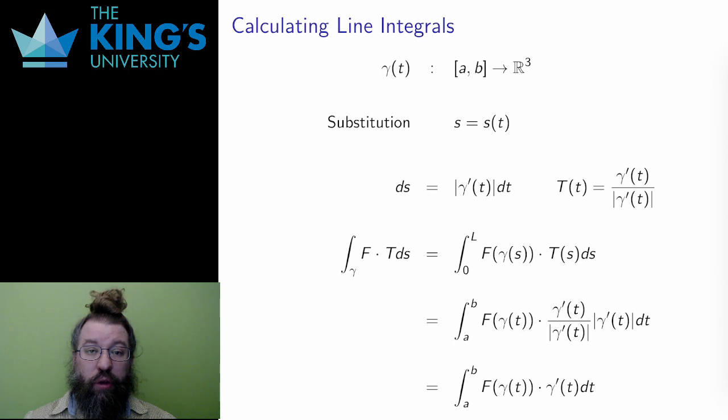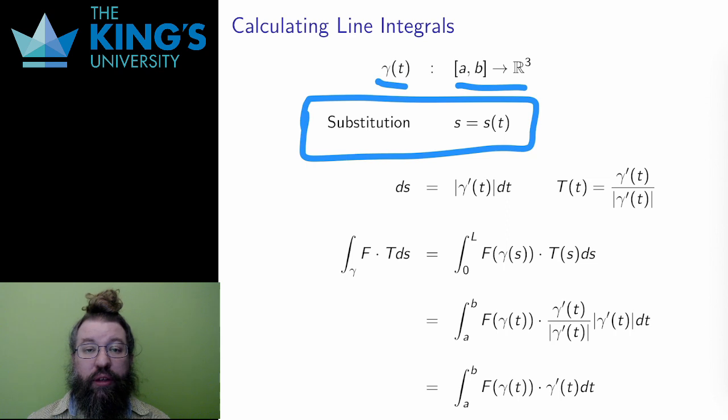Well, let γ be a curve in R³ that lives in the domain of a vector field F. I essentially want to do a substitution in the previous integral. The arc length s can be written as a function of the other parameter t. This is the arc length function, the distance the curve travels over time t, in the parametrization t.